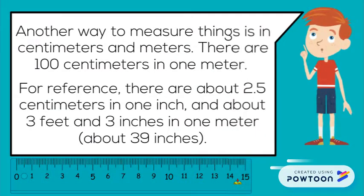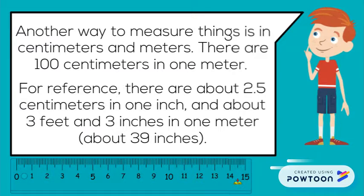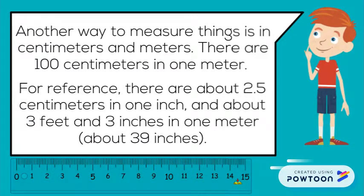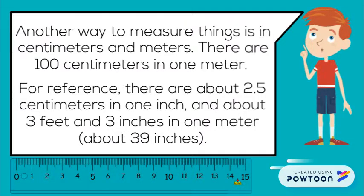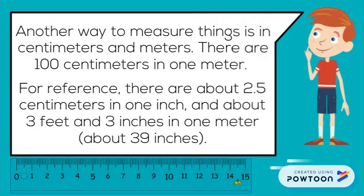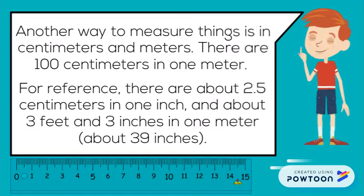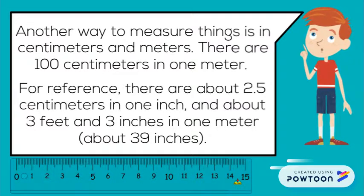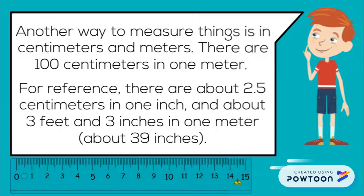Another way to measure things is in centimeters and meters. There are 100 centimeters in 1 meter. For reference, there are about 2 and a half centimeters in 1 inch and about 3 feet and 3 inches in 1 meter. So about 39 inches in 1 meter.